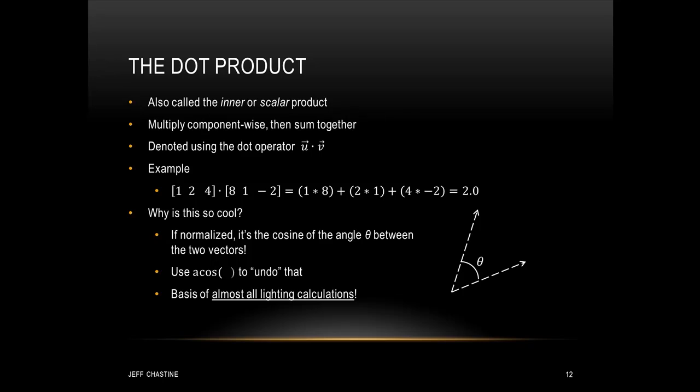So why is this such an important operation? If these vectors are normalized, the dot product gives the cosine of the angle between them. To find the actual angle, we use the arc cosine of the dot product result. This concept is going to serve as the basis of almost all of the lighting calculations we do in this class.